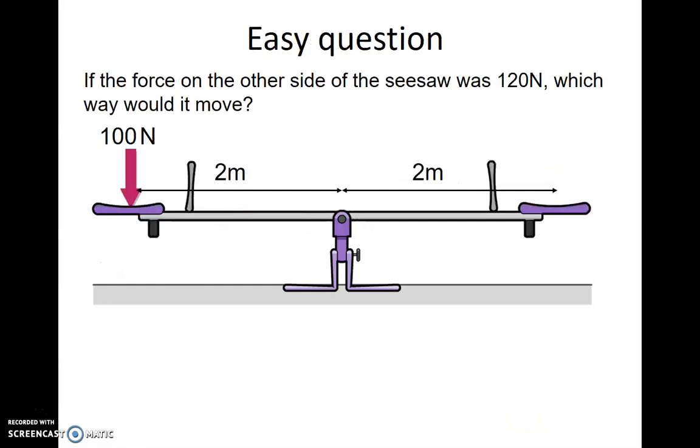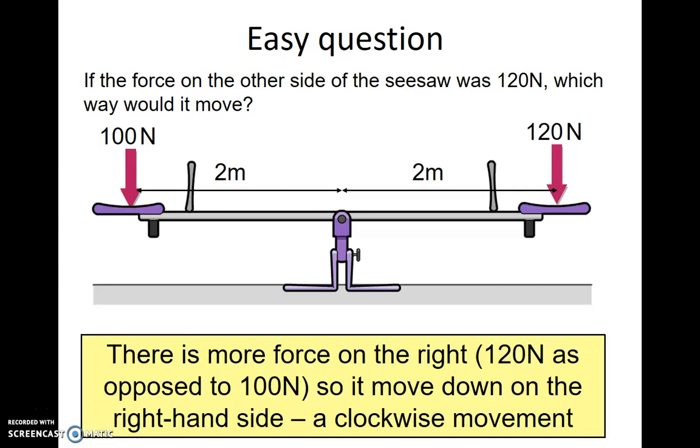Easy question. If the force on the other side of the seesaw was 120 newtons, which way would it move now? Well it's going to move down to the right. As 120 is bigger than 100, so this is a clockwise moment because it's moving round this way. Clockwise.